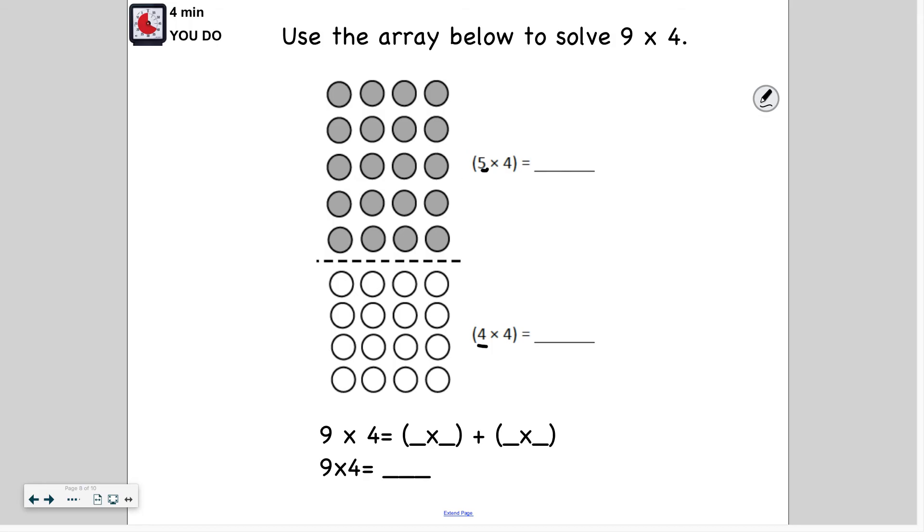So five times four, we already heard in the previous parts of this lesson is 20. Now four times four, well, if four times three is 12, I can just add another group of four to that. So 12 plus four, 13, 14, 15, 16. So I get 16. And now I can add these up. But let me fill in these blanks here. So nine times four is the same thing as five times four. That's the first part they gave us. And the second expression they gave us, breaking apart the nine, is four times four. So when I add these up, let's go ahead and do that. 20 plus 16. When I add the products, six plus zero is six. Two plus one is three. So that means that nine times four is 36.